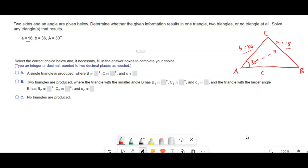And you can see it's not. 18 is less than 36, so we're not going to get just a single triangle case where we can just jump right in and begin.